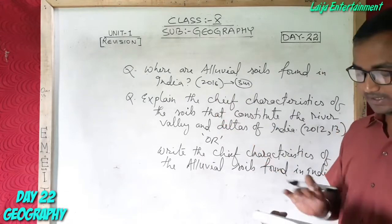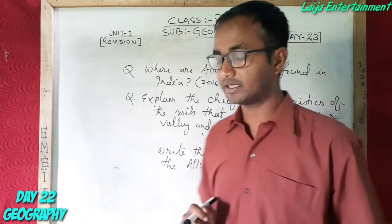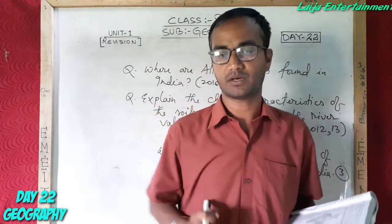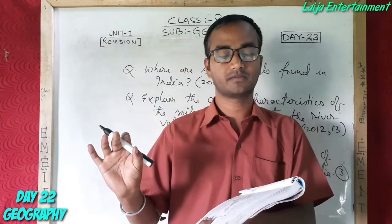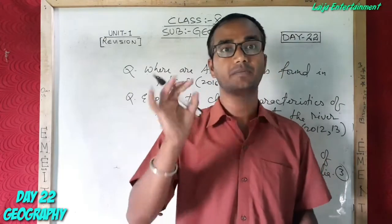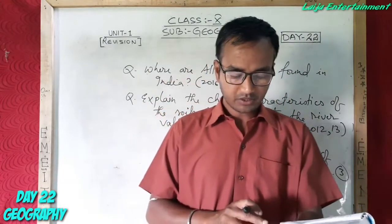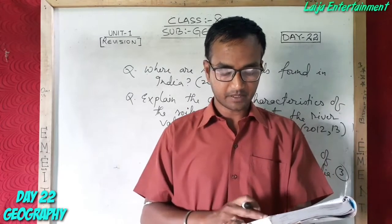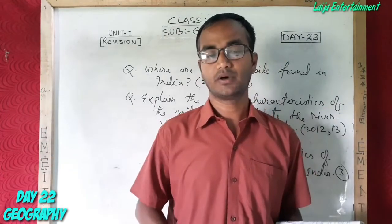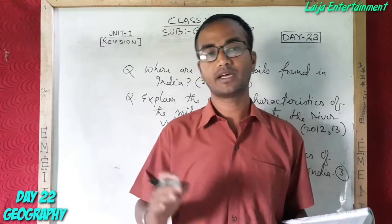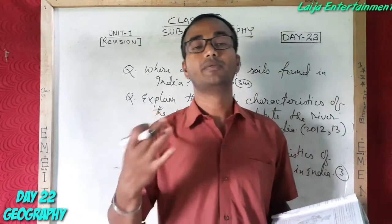Where are alluvial soils found in India? Alluvial soils are found in the entire Northern Plains — India's Ganga and Brahmaputra Plains.